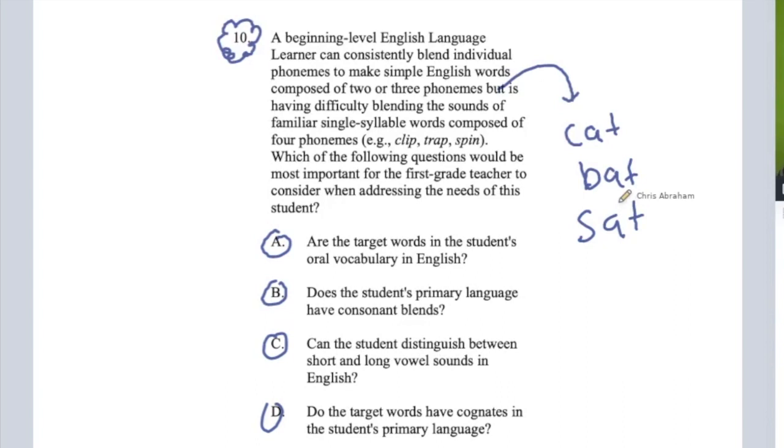Basic words made up of two or three phonemes like cat or bat or sat. Now here we have CVC words that are very basic. Each letter, each grapheme matches up with its own sound or phoneme. In cat, we have three letters that match with three phonemes. We call these CVC words. So the student is having success with these types of words. But now they're having difficulty with other words with four phonemes like clip. Now what is different about clip?